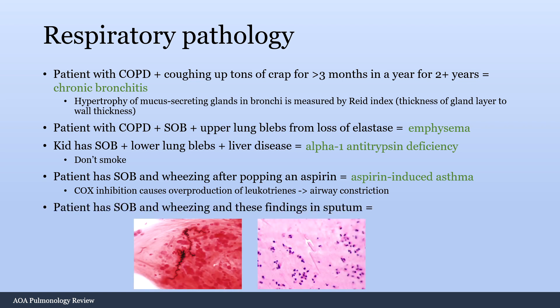A patient with shortness of breath and wheezing who has certain findings in their sputum: little spirals called Curschmann spirals, and broad rod-like crystals called Charcot-Leyden crystals. These are two findings of asthma. If you see these on your Step 1 exam, they are trying to get you to answer that the person has asthma.